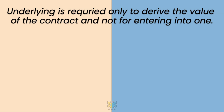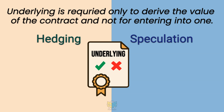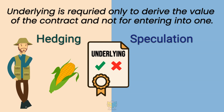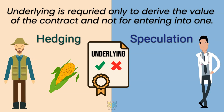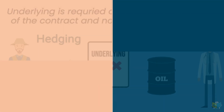As the underlying asset is required only to derive the value of the contract, the seller may or may not be holding the underlying when entering into the contract. Derivatives can therefore be used for hedging, i.e. risk mitigation, or even for speculation. For example, a farmer wants to fix the selling price of his crop before the harvest — he is thus hedging his risk. A doctor feels that crude oil prices will rise — he is speculating based on his research or intuition.